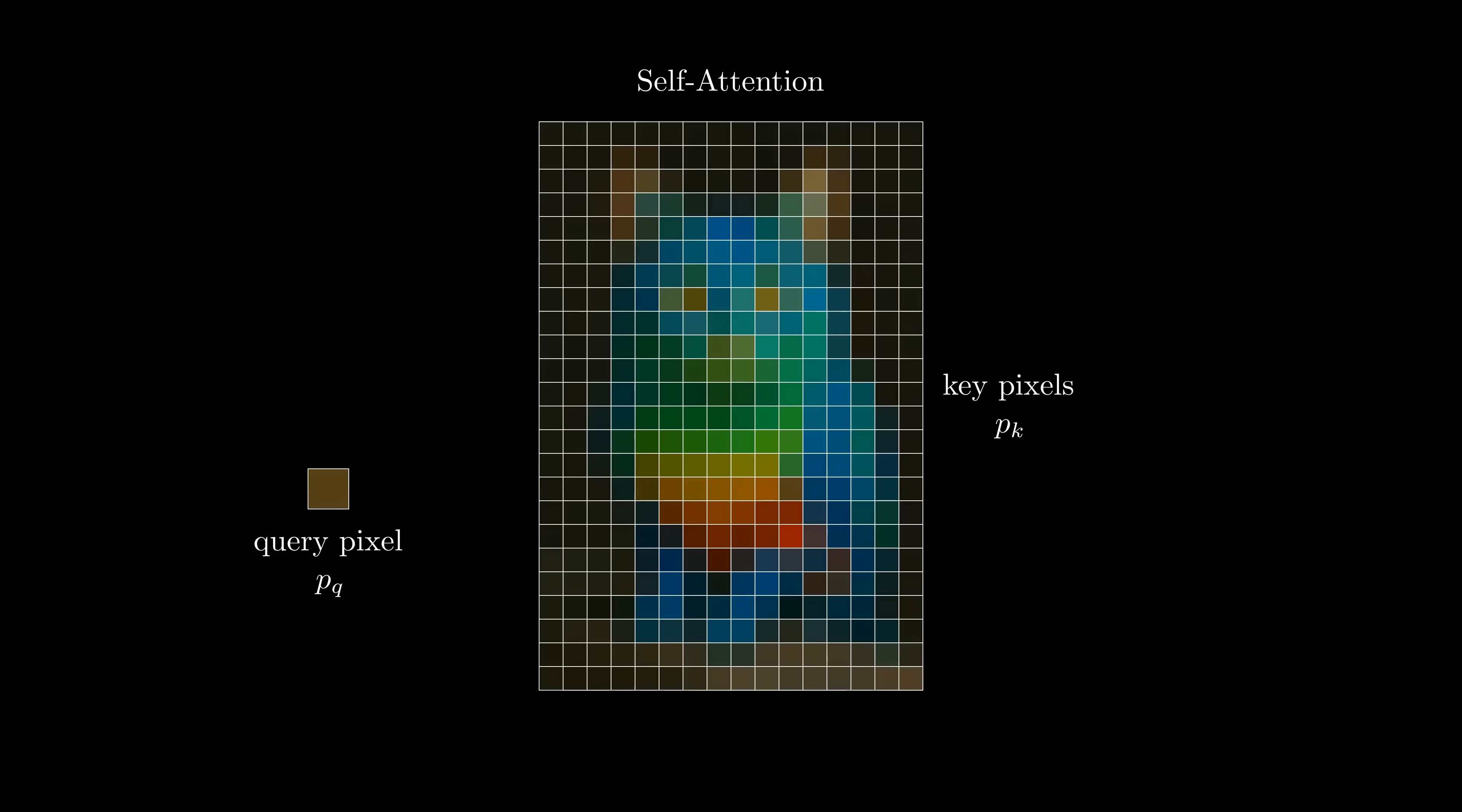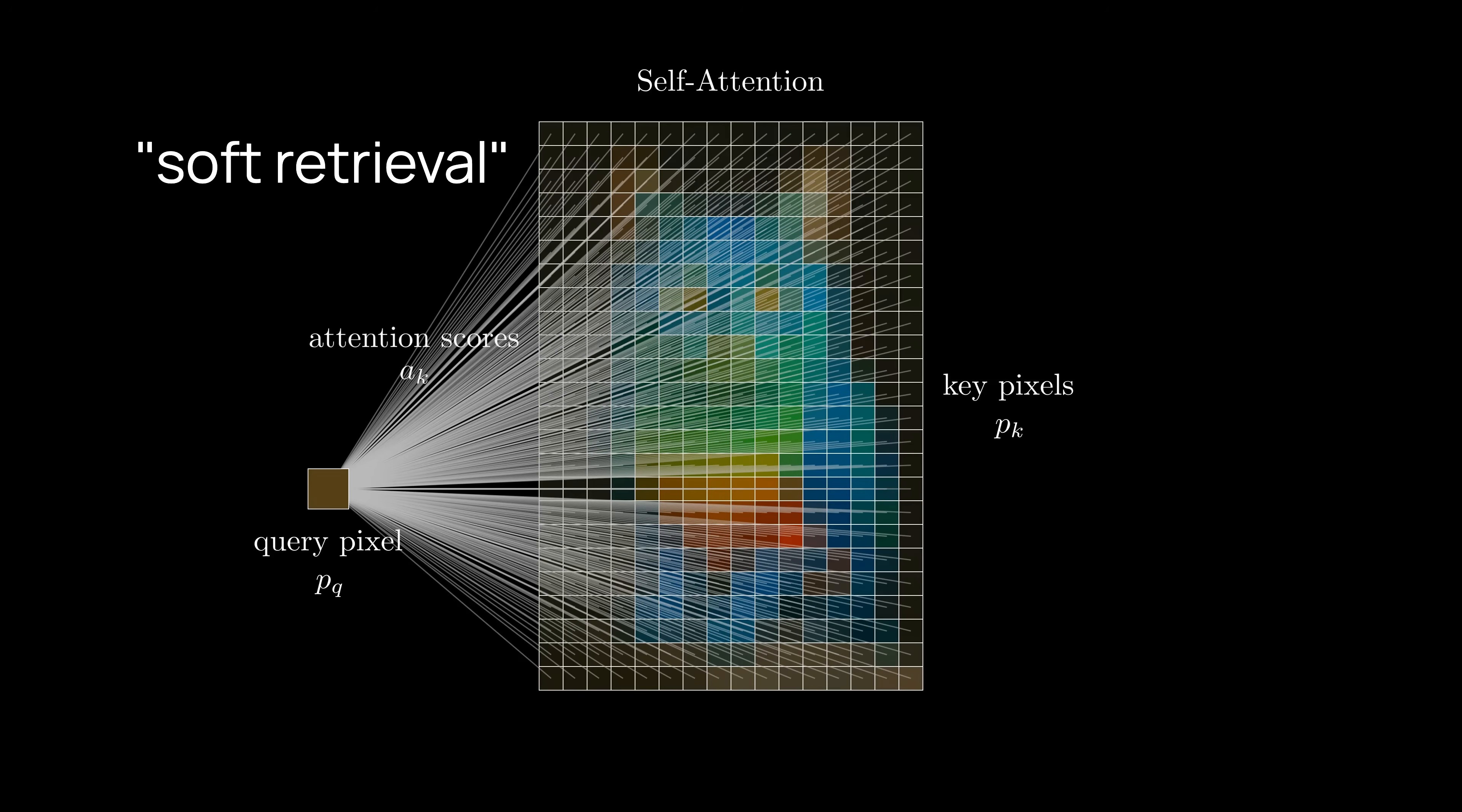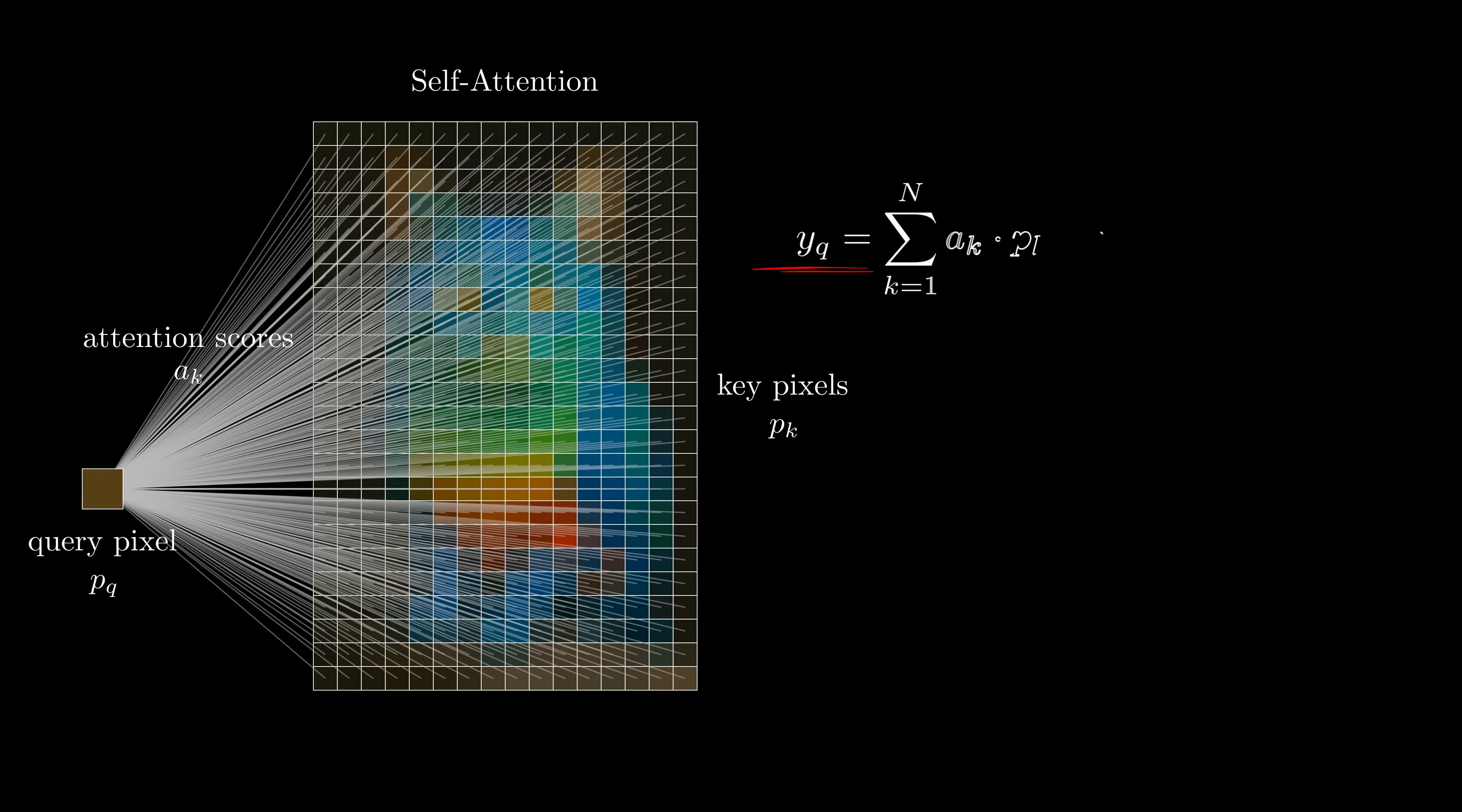When retrieving from a regular database, we would pick the top K most relevant keys. That's called hard retrieval. But self-attention does soft retrieval instead. It associates a weight or attention score to each key pixel, reflecting its relevance to the query pixel. So the output pixel is a weighted sum with a constraint that attention scores should be positive and sum up to 1. The amount of attention that a query pixel should attribute to a key pixel K can be defined by a similarity measure in vector space, like a dot product. A simple trick to ensure the score is positive is to exponentiate it, and another trick to ensure the attention scores for a query pixel sum up to 1 is to normalize by their sum.